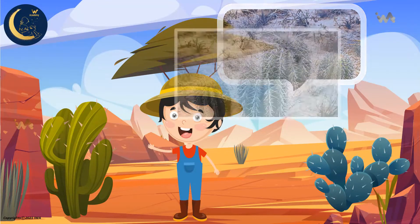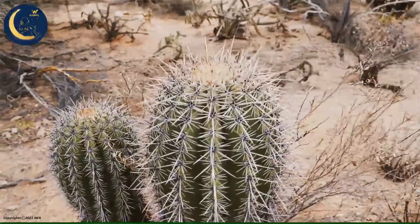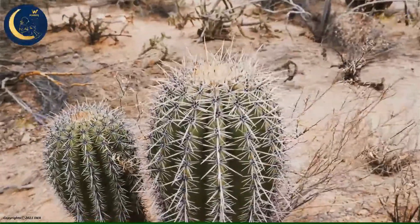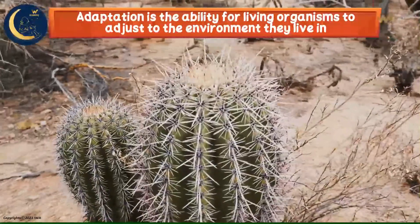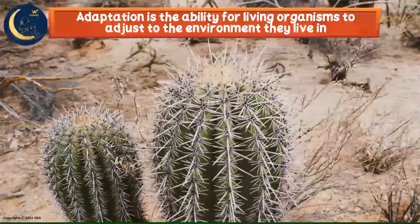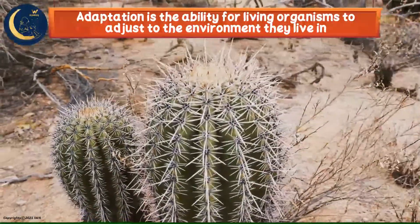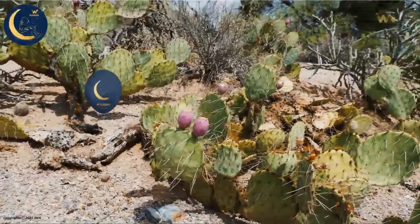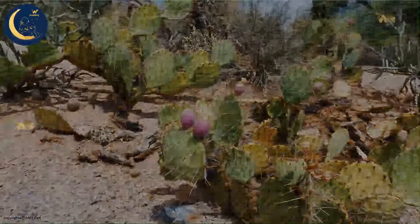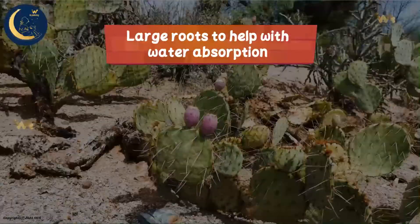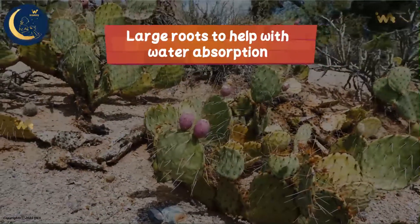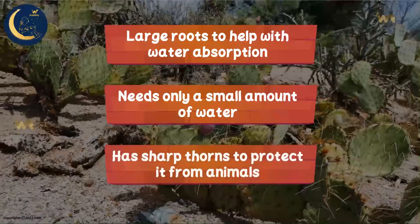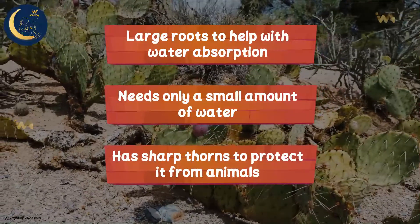The cactus has characteristics that help it live in desert areas, and that is what we call adaptation. Adaptation is the ability for living organisms to adjust to the environment they live in. Some of the cactus's characteristics include having large roots to help with water absorption, only needing small amounts of water, and having sharp thorns to protect it from animals.